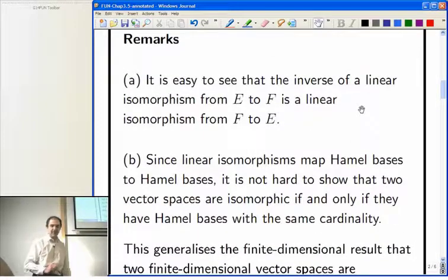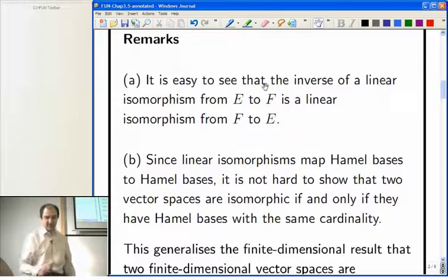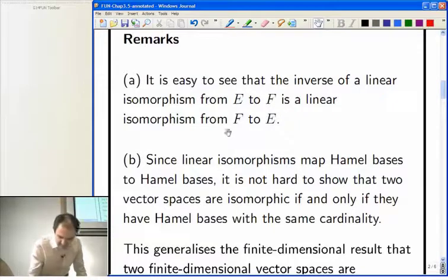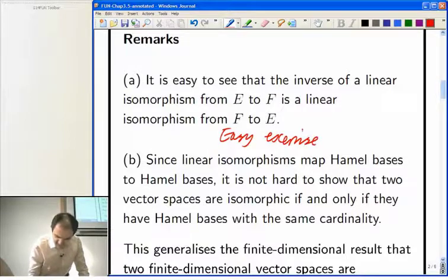Here's an easy exercise. If you've got a linear isomorphism from E to F, then the inverse map is a linear isomorphism from F to E. So, that's an easy exercise. But you should try it, probably, just to make sure you're very happy with it.